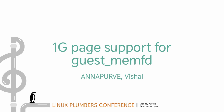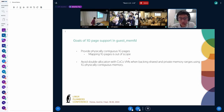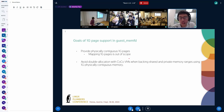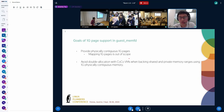I'll kick this off by talking about the goals of 1G page support and guest memfd. The first goal is to provide physically contiguous 1G pages — mapping these pages is out of scope because we expect private pages to be managed by KVM and shared pages will be managed by core MM. The second goal is to avoid double allocation when backing shared and private memory. Does anyone have questions about the goals?